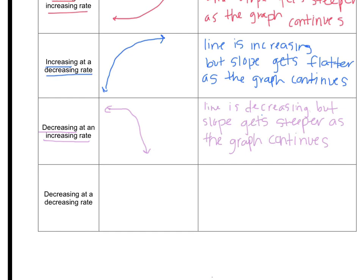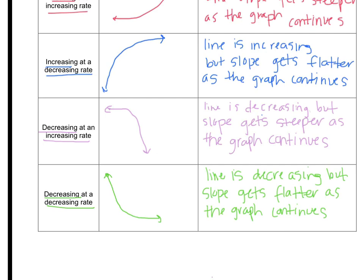The final type is decreasing at a decreasing rate. The graph starts off high at the top and goes down, but instead of starting flat, it starts off really steep and then flattens out. So the slope starts off very sharp and then decreases down to zero. The line is decreasing, but the slope gets flatter as the graph continues. I don't expect you to have all these types memorized, because it's tricky to know if the line is increasing or the slope is increasing. But have this chart available so when we do practice, you can use it and get better. If you have any questions, write them down and ask me when you come to class.